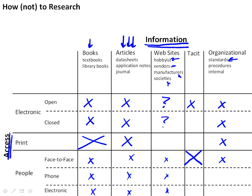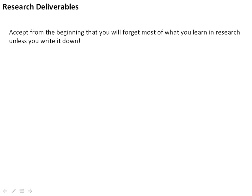Hopefully this has given you a sense of the types of information important for research and the different ways you can access it. Research deliverables are critical — we often think research is something we do inside our head, but unless you write things down, you're going to forget most of what you learn. Writing things down and coming up with a deliverable is a critically important step in research, and if you're not doing this, you're really wasting your time.